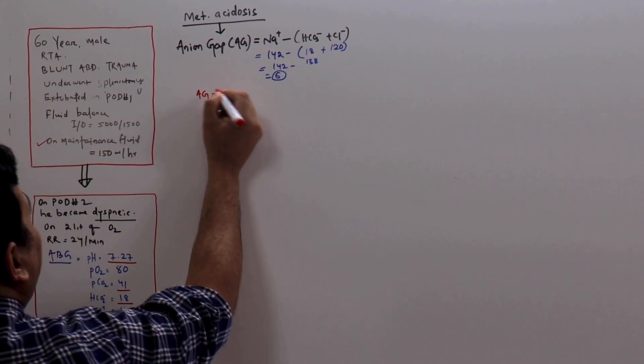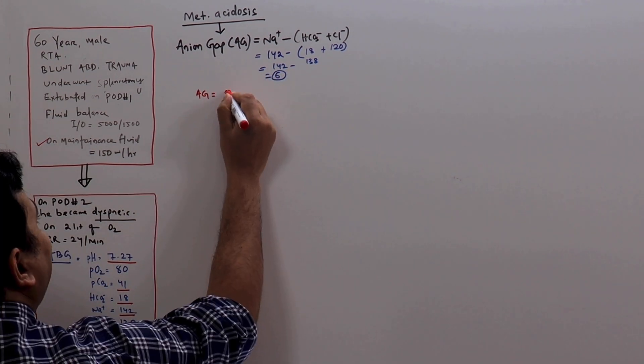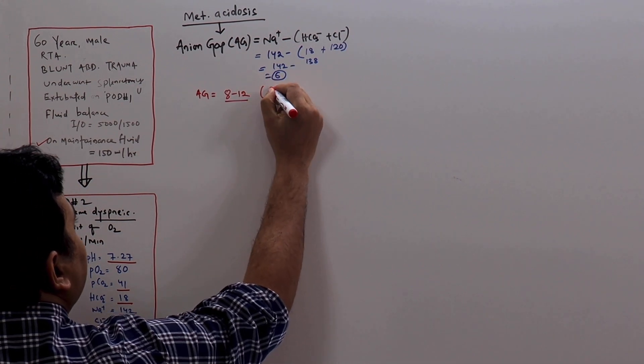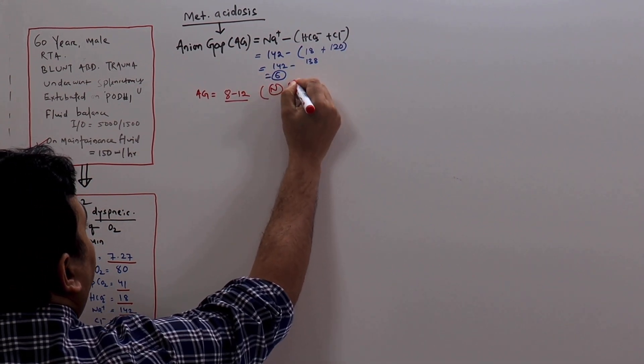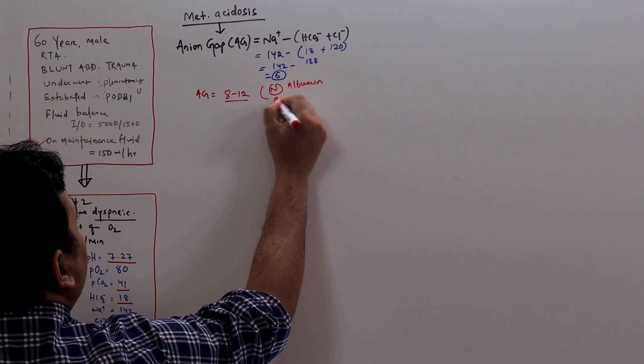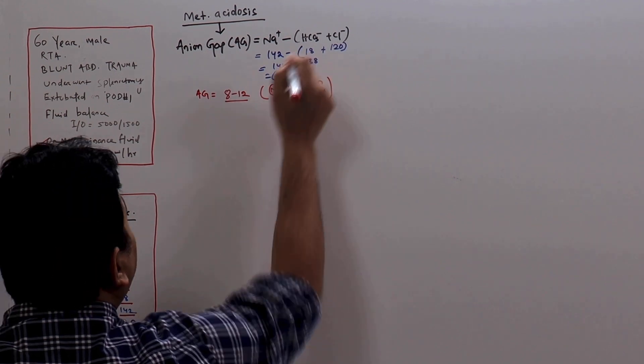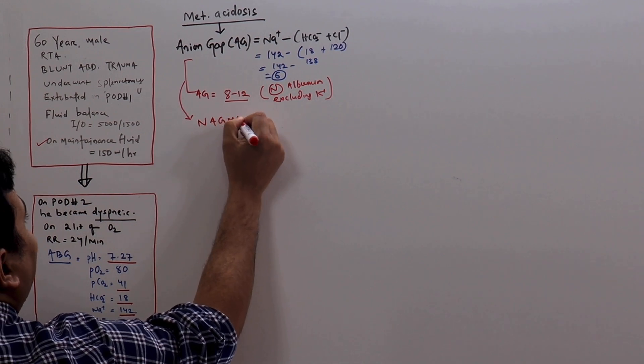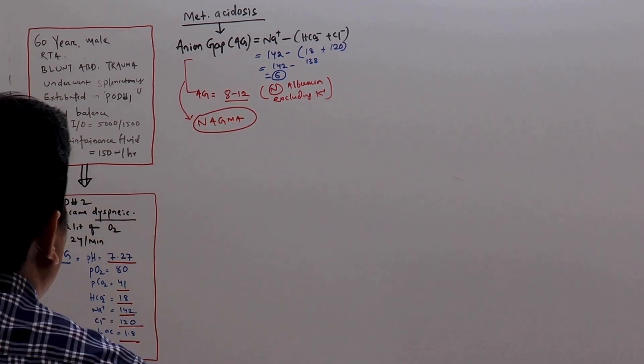The normal range for anion gap is 8 to 12. That is in a person who has normal albumin excluding potassium. So this is a clear cut case of normal anion gap metabolic acidosis. This we know.